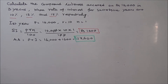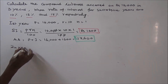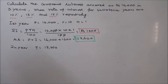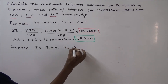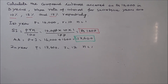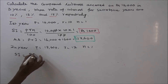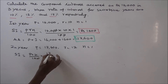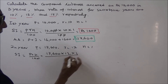Next, for the second year, the principal is 17,600, rate of interest is 12%, and N is equal to 1. Therefore, simple interest is equal to PRN by 100, that is equal to 17,600 into 12 into 1 by 100.